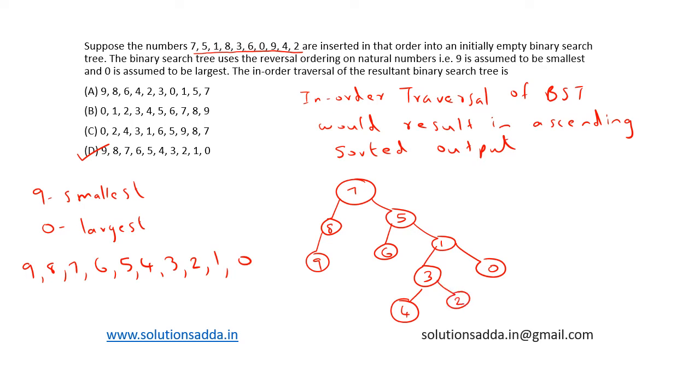Now let's perform the in-order traversal. To perform the in-order traversal, we traverse it like this: 9 would be printed, then 8 would be printed, in this order.